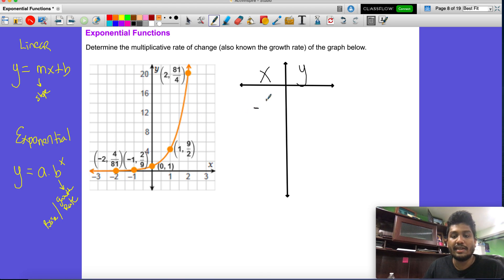Let's just choose a couple of those. So let's start negative one and two ninths. Let's start zero comma one. Let's do one comma nine over two. And two comma 81 over four.